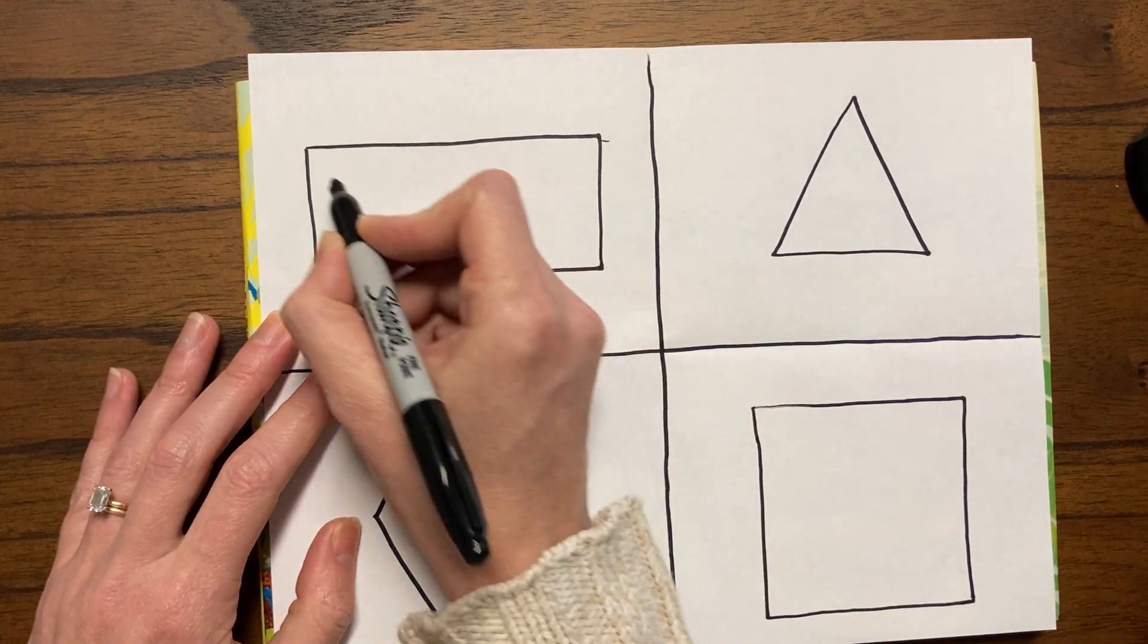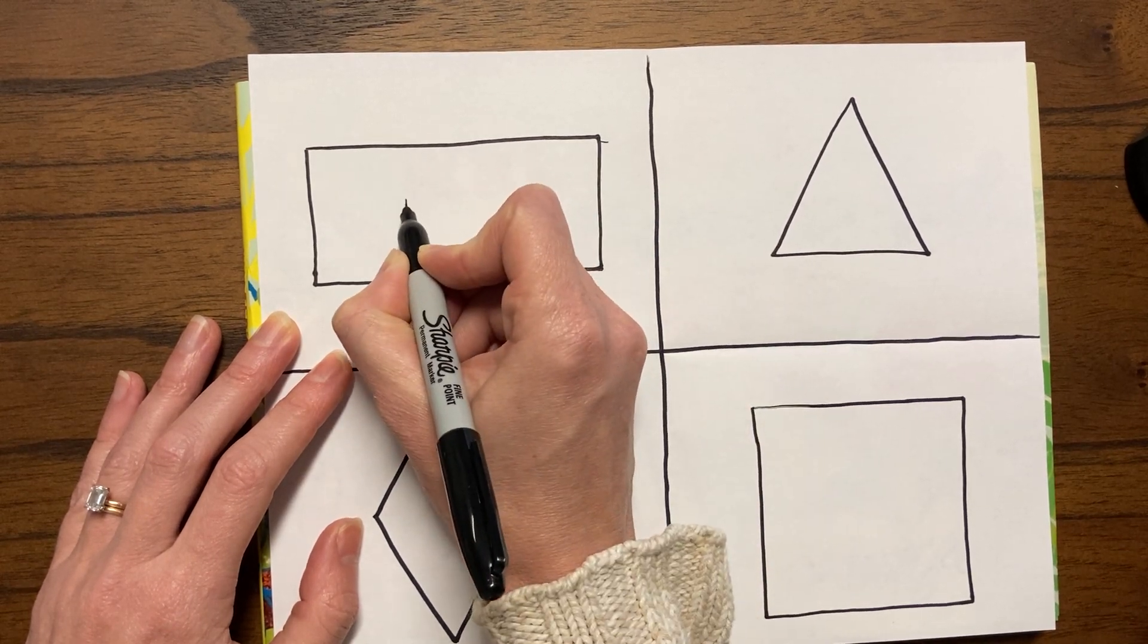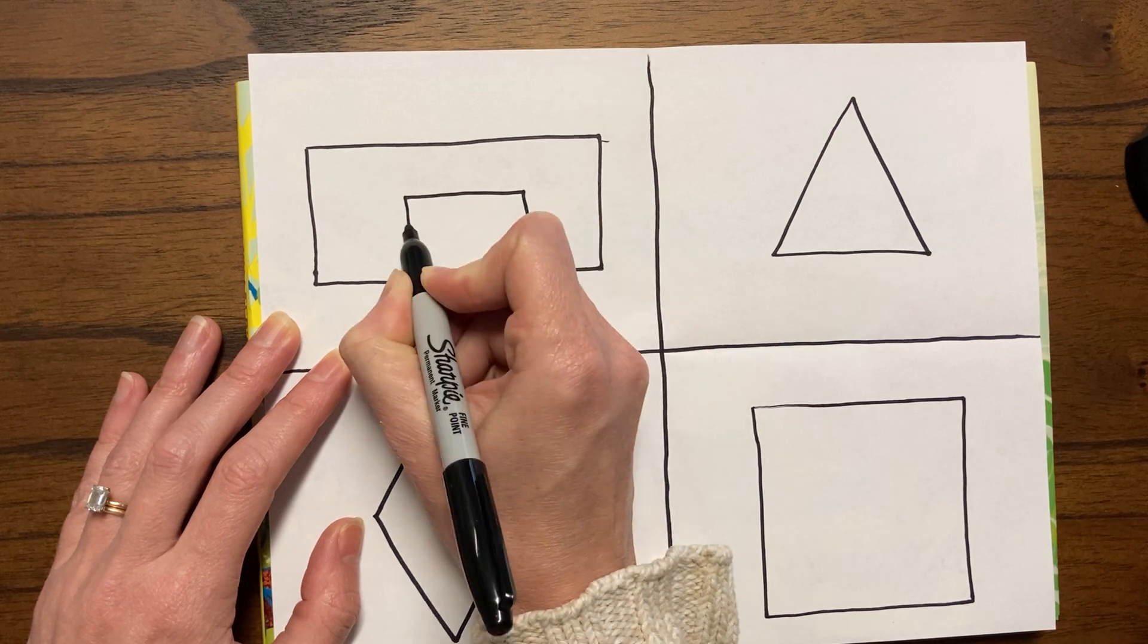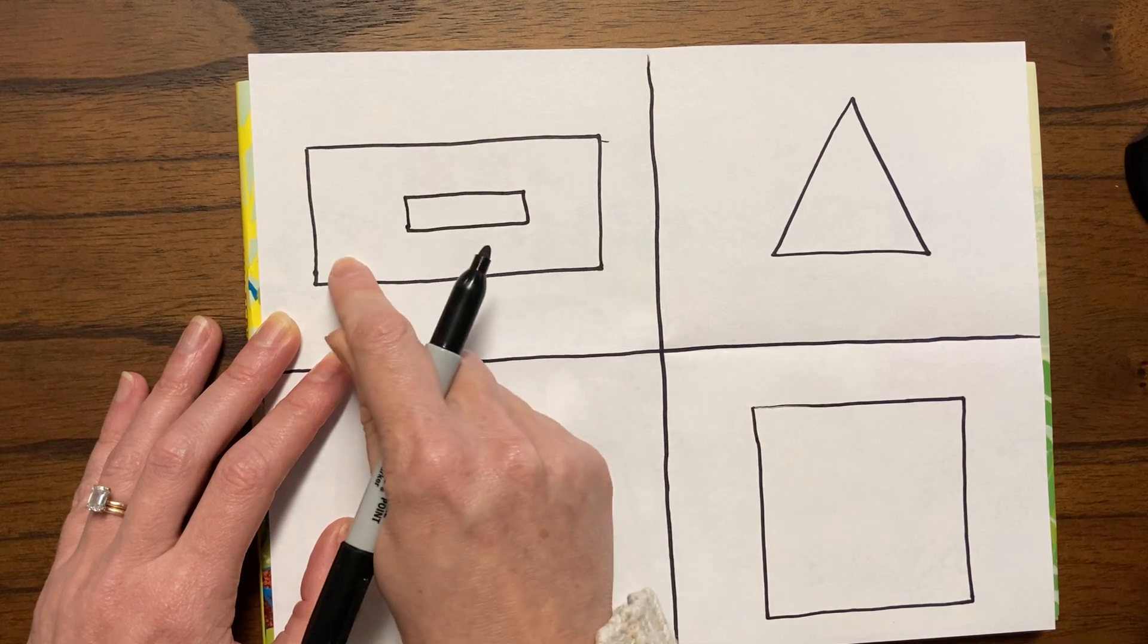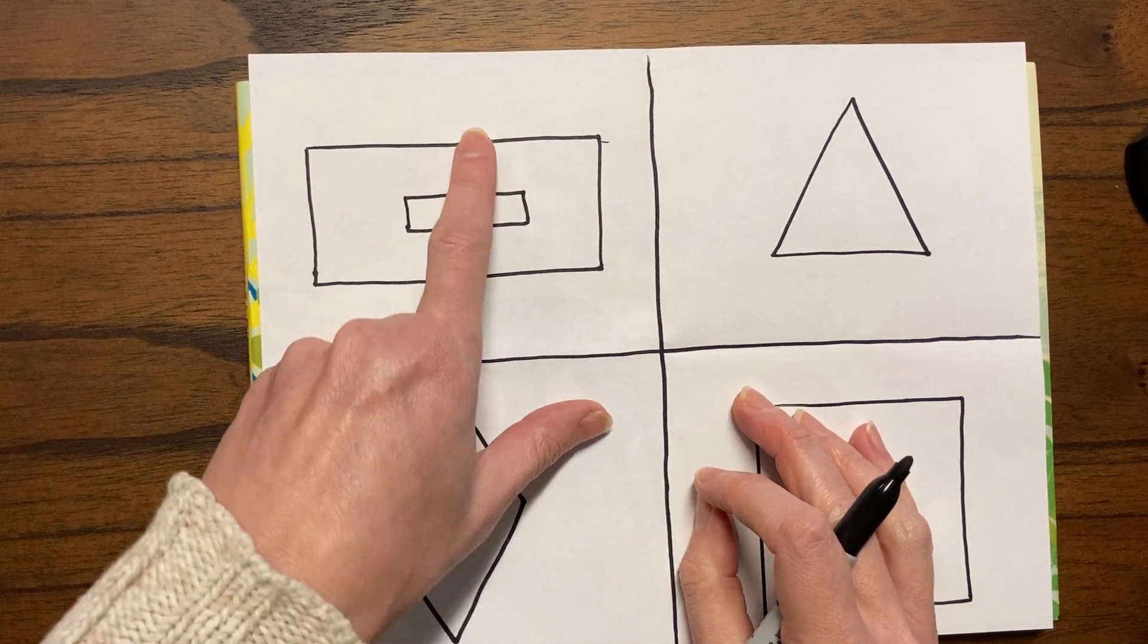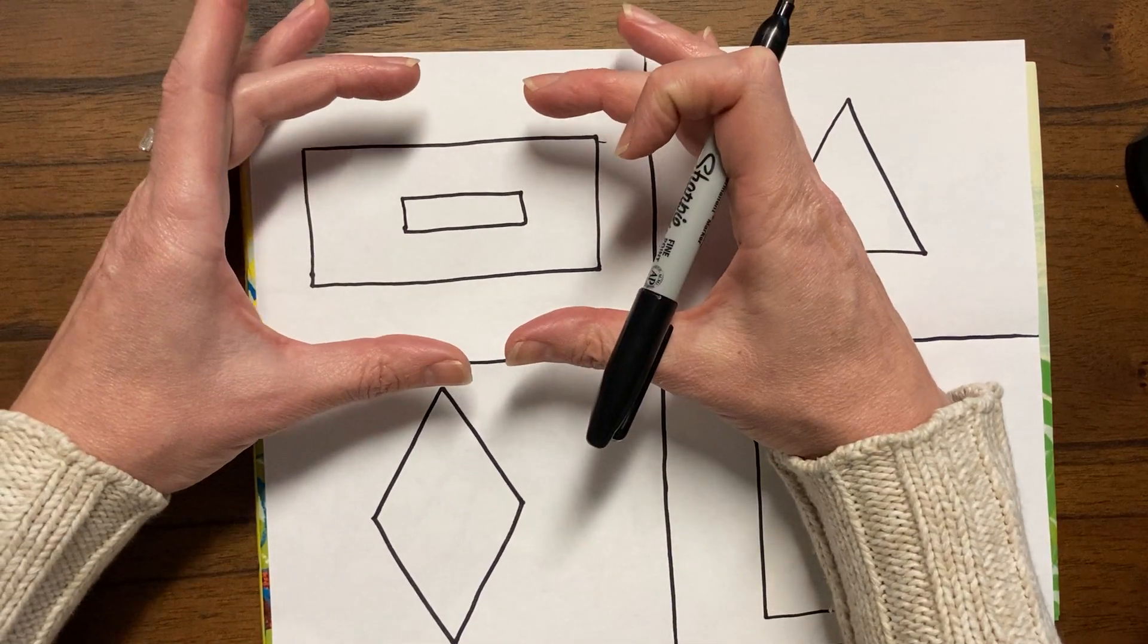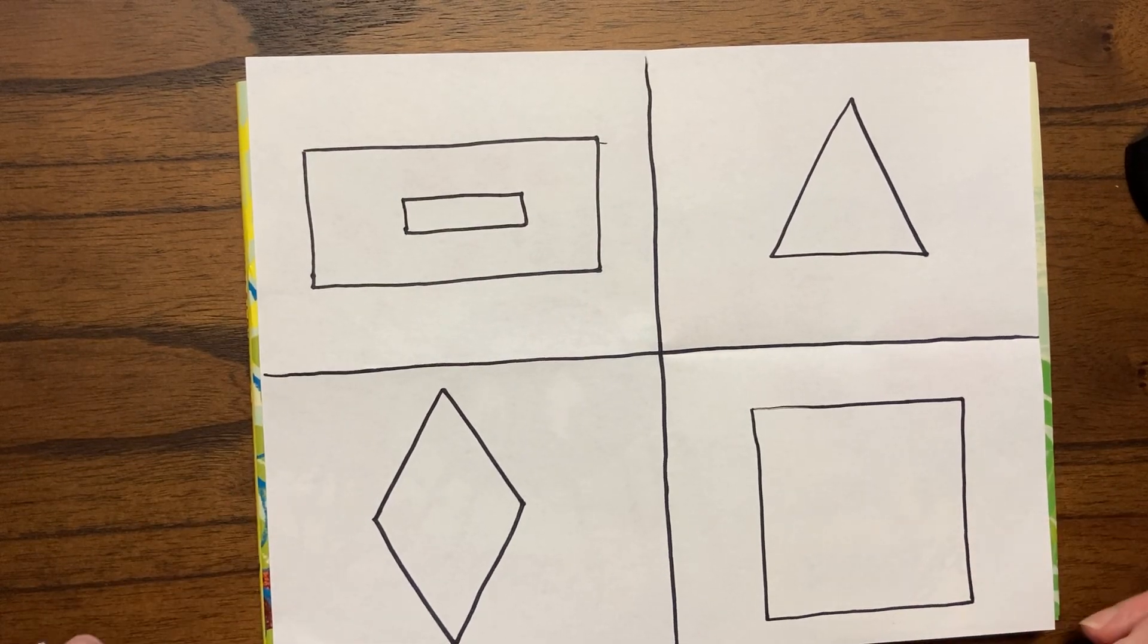So watch what I'm talking about. Inside our rectangle, I want you to draw a smaller rectangle. Notice how much room I left all in this space. But they're about the same shape. It's called different proportions. This one's bigger. This one shrinks down to be a little smaller.